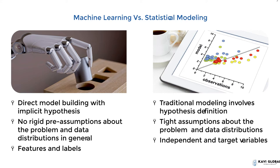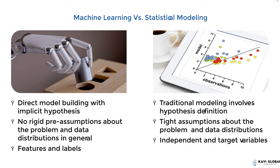You have to read the data, understand it, and based on the data and the objective you need to follow one or many models. But with machine learning, there is lots of processing power and storage available. How model development is done now using machine learning is there are no assumptions about the data and its behavior — all the data is fed into one or many models, and whichever model gives the best result, you just go and choose that.